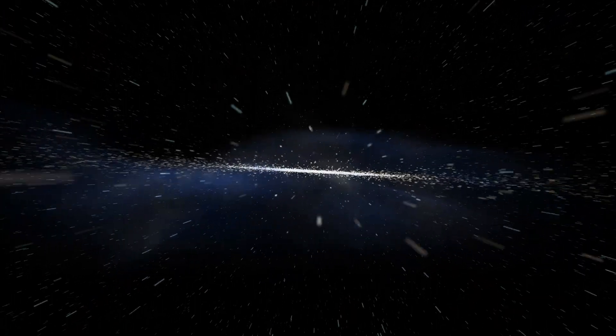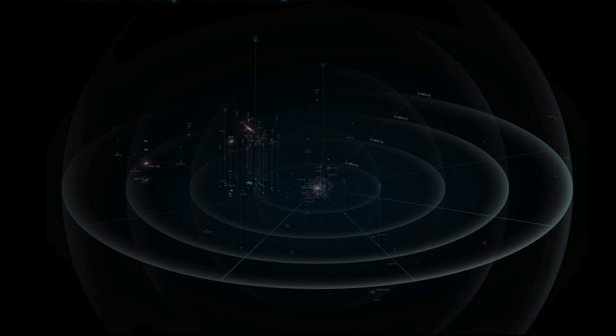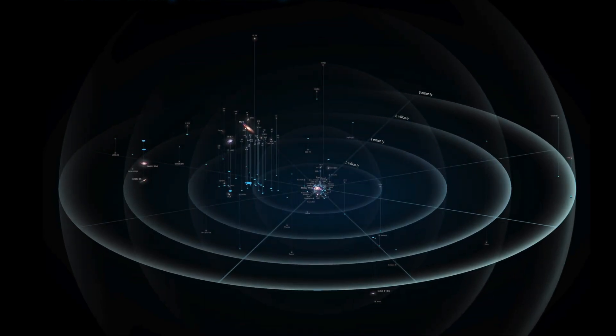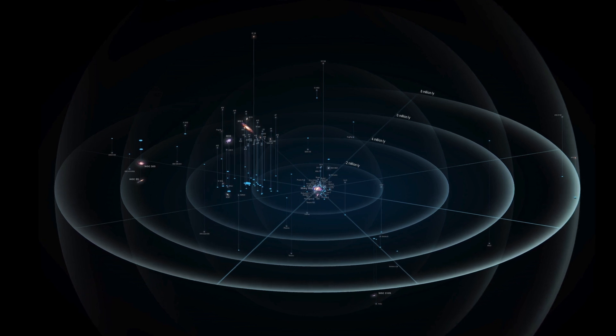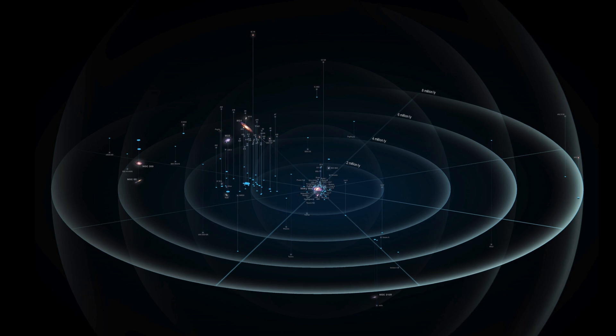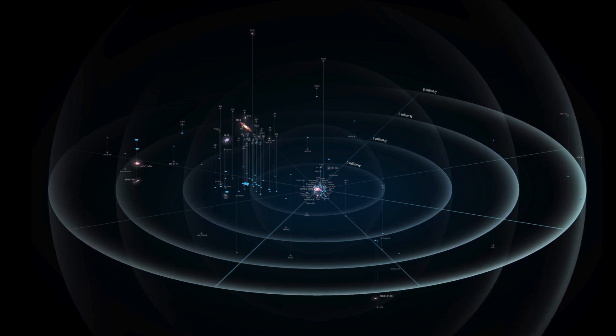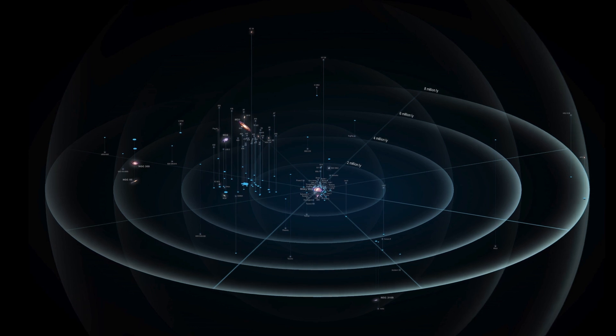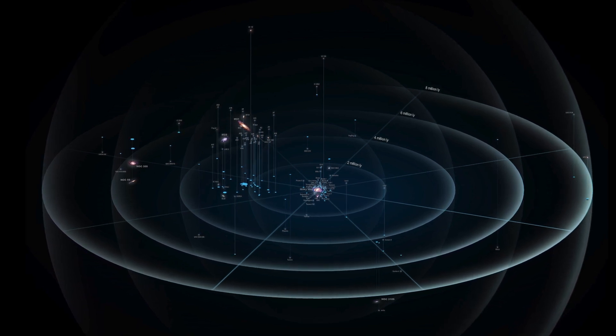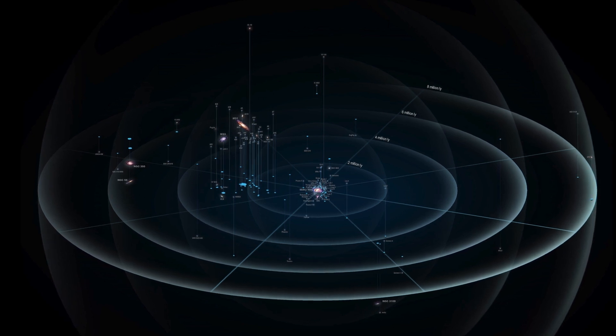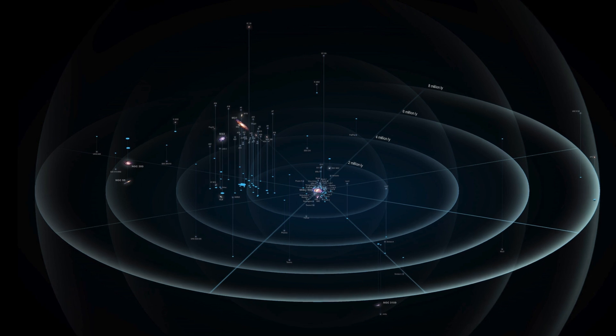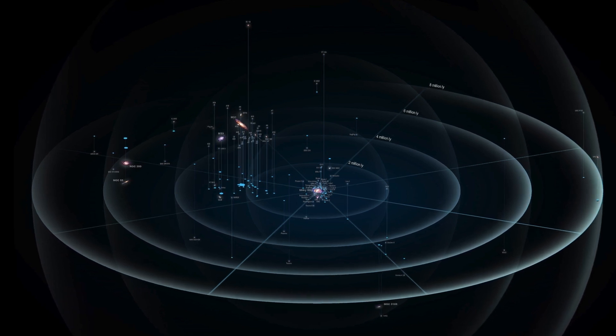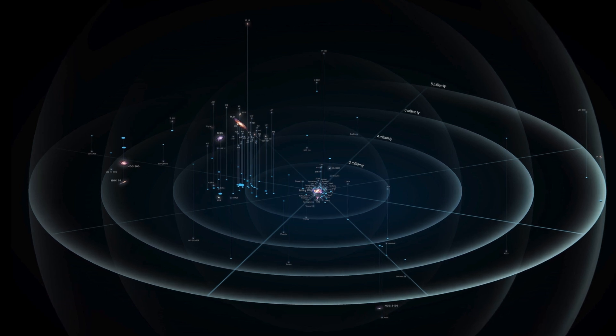But as we venture beyond our home galaxy, we enter the almost unimaginable vastness of intergalactic space where galaxies drift like islands in an endless cosmic ocean, separated by incomprehensible distances. Our galaxy belongs to a small cosmic neighborhood known as the Local Group, a cluster of more than 50 galaxies spread across approximately 10 million light-years. This diverse assembly includes spiral galaxies like the Milky Way and Andromeda, alongside numerous dwarf galaxies. The scale here is so immense that light itself would take 10 million years to travel from one end of the Local Group to the other.